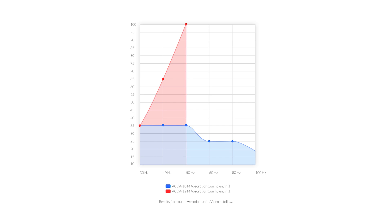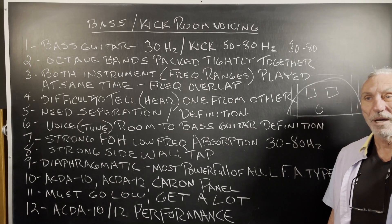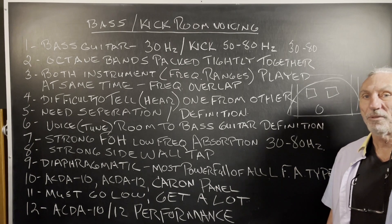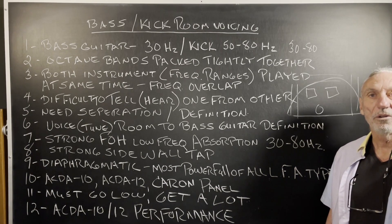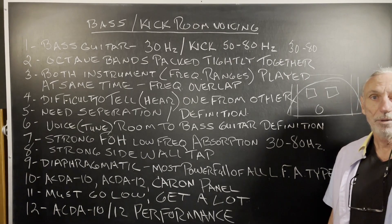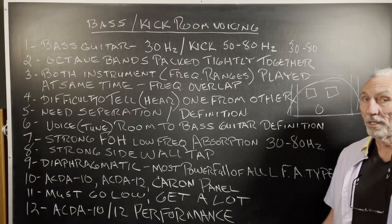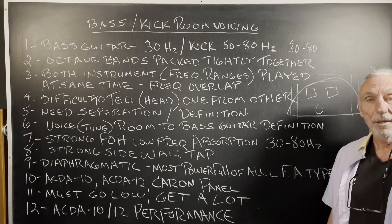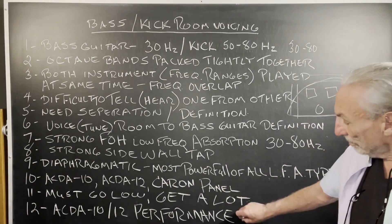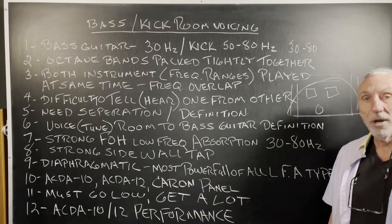Look at the performance of our 10s and 12s. The 12 is really our most powerful unit — 30 to 50 cycles — most powerful unit of all. You can see the absorption coefficients in the graph: huge, 100% at 50 cycles, 63% at 40 cycles. That's really big if you think about it. Compare that to other companies' performance — you won't see anything close. Most of the products out there are boxes filled with building insulation, so you get what you pay for. Look at the performance of our 10 and 12 and our carbon panel.